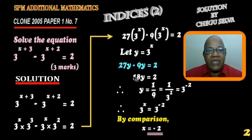27 minus 9 is 18, so 18y equals to 2. Bring the 18 down, you get y equals to 1 over 9, which is equal to 1 over 3 squared.